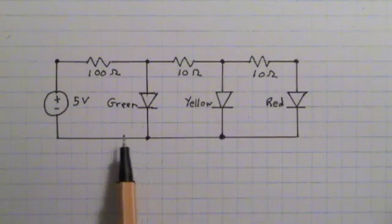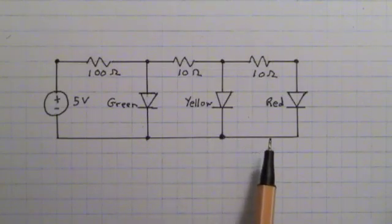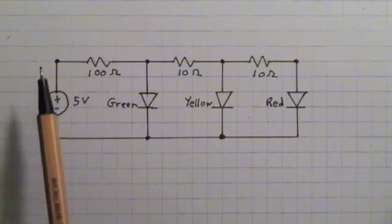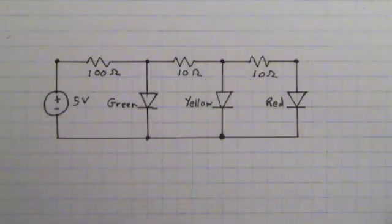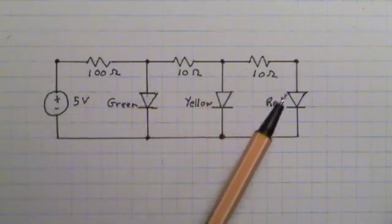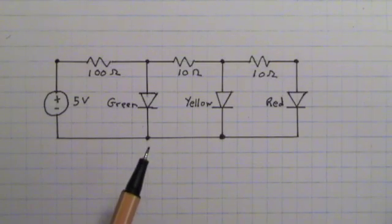And then there's a fifth node here. Remember that a juncture point connected by zero resistance wire is considered to be all one node. So we could say node 1, node 2, node 3, node 4, and node 5. Or we could say node A, node B, node C, node D, and node E. Let's go with the letters for today's example.